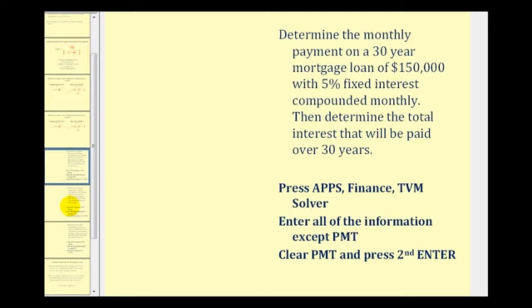Here we're going to determine the monthly payment for a 30-year mortgage loan of $150,000 with a 5% fixed interest compounded monthly. And then we'll determine the total amount of interest paid over the 30 years.